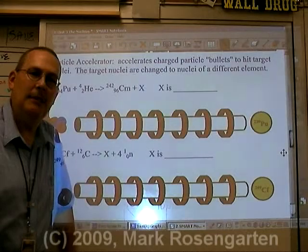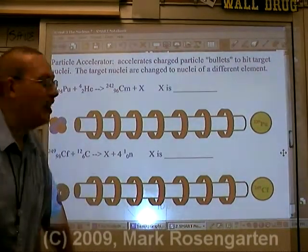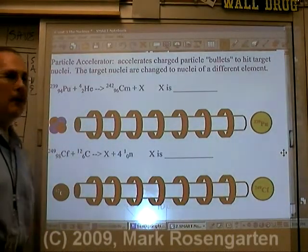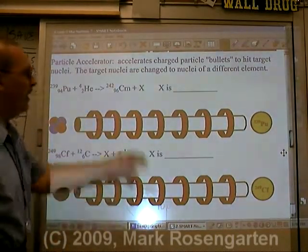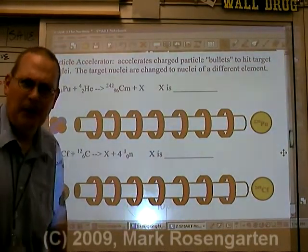This is how we discovered the elements above uranium. We actually made them in a particle accelerator. So you take plutonium, and you hit it with an alpha particle, and it'll form curium, and it'll also form another particle, what I like to call the mystery particle.